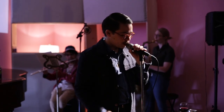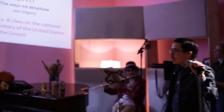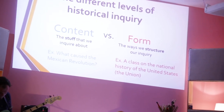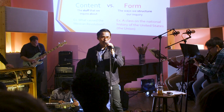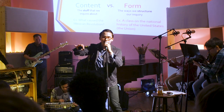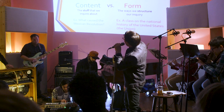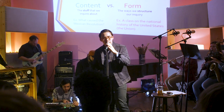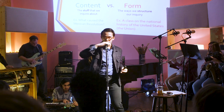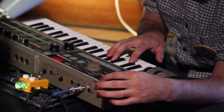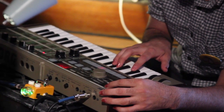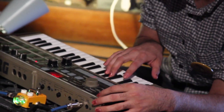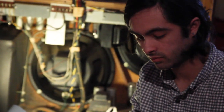I will give you two examples to illustrate what I mean. The question 'What caused the Mexican Revolution?' is a content question — I don't really need to get into that right now. A class on the national history of the United States is a structure. It is a form in which you order historical inquiry. Today we're going to examine and critique that form of inquiry.